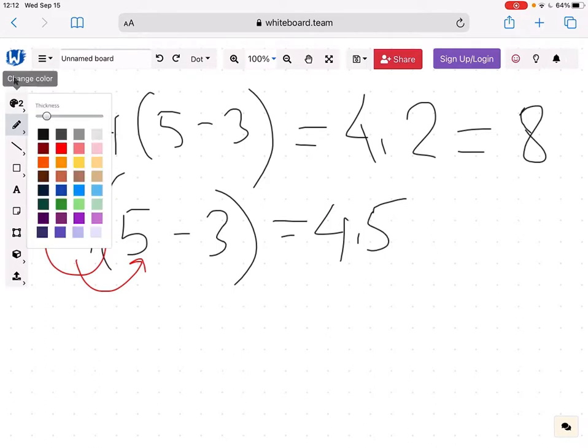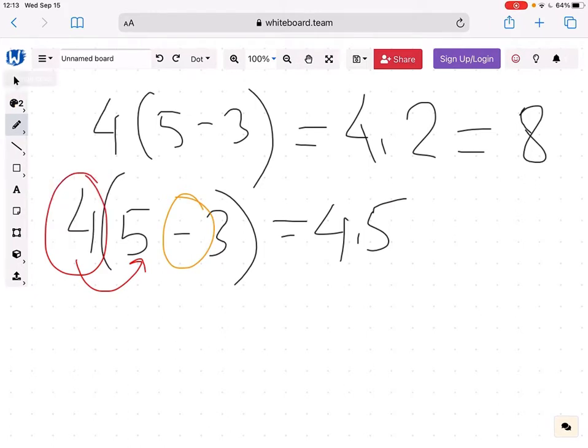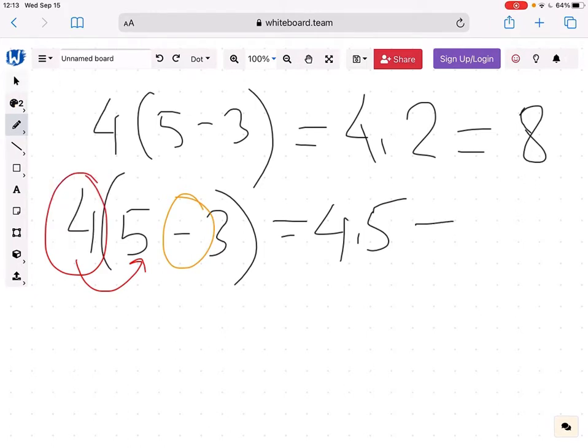Then we're going to apply the sign, which is minus. So we're putting minus here. And the last thing we do is multiply 4 and 3, so we get 4 times 3. Again, it's 4 times 5 is 20, minus 4 times 3 is 12, you get 8.